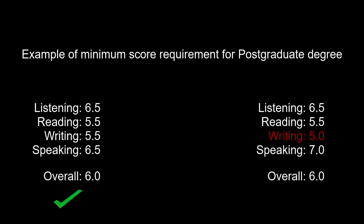In the second example, you achieve 6.5 in listening, 5.5 in reading, 5.0 in writing, and 7.0 in speaking. Despite achieving an overall score of 6.0, you fail to meet the criteria for English language because you scored 5.0 in the writing section. In this case, you are not eligible to apply for a study visa in Australia.